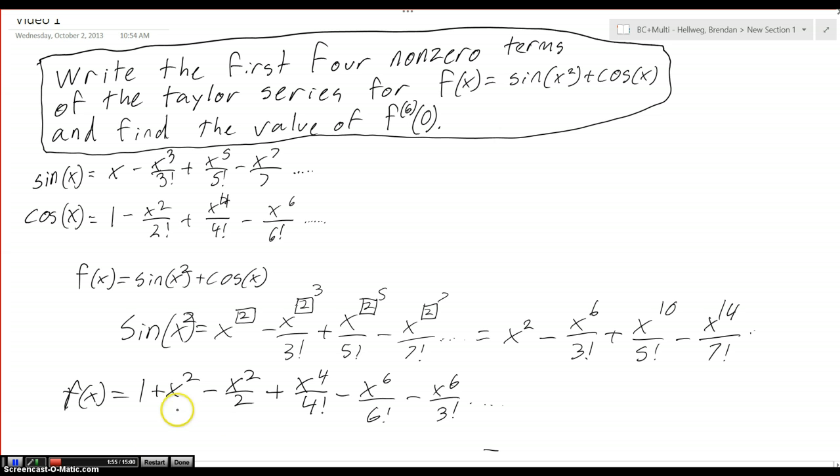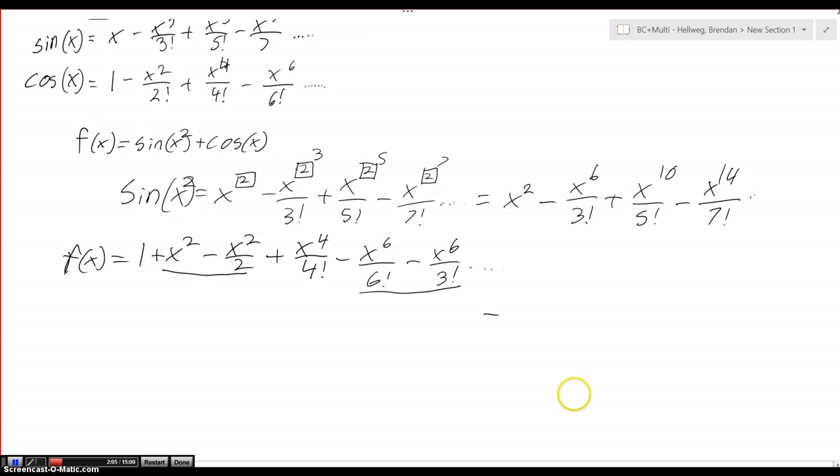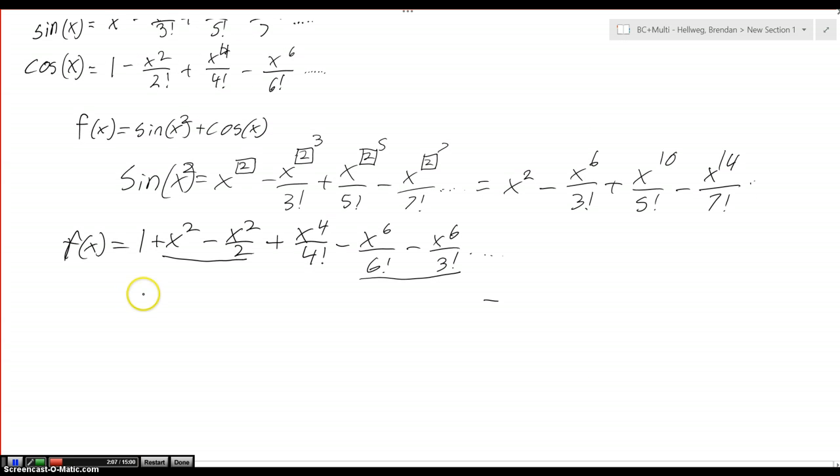So we can get rid of part of this and part of this and make that a heck of a lot simpler. I'll create a little bit more space for that so we can end up with 1 plus x squared over 2 plus x to the fourth over 4 factorial.